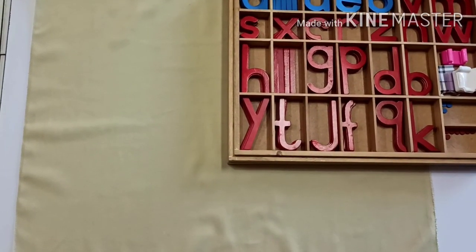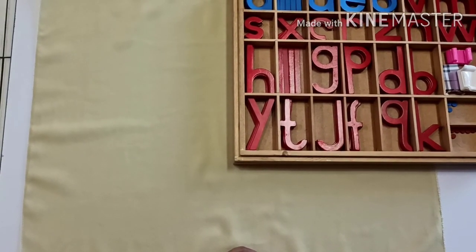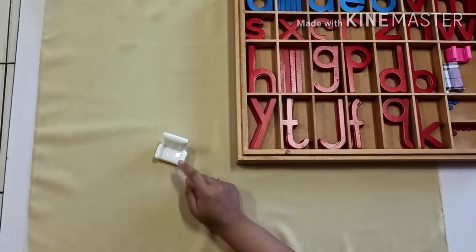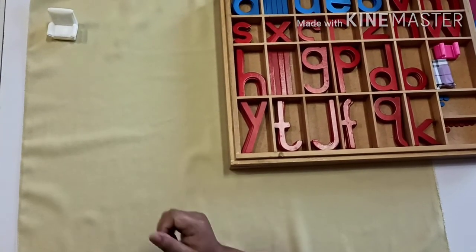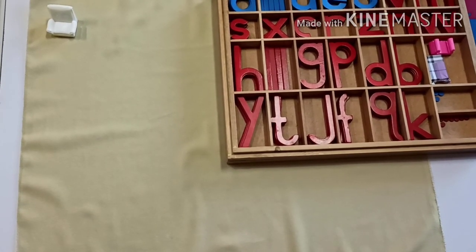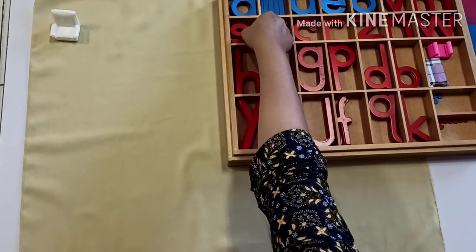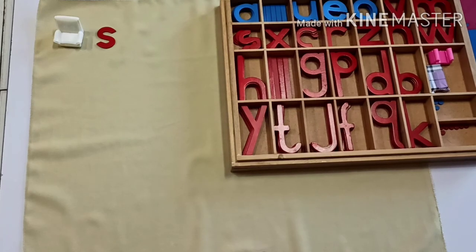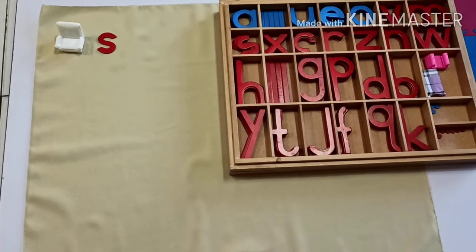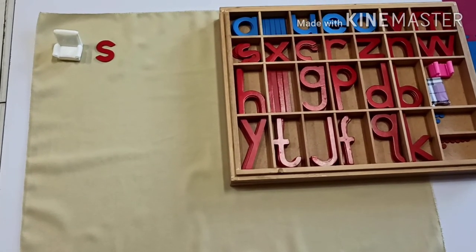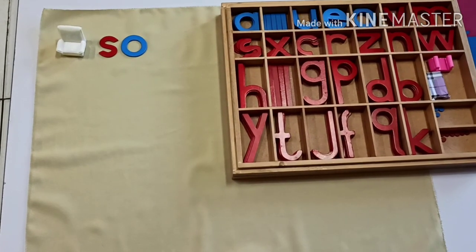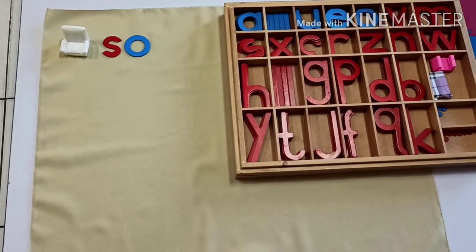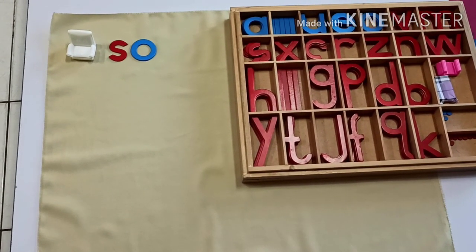Now let's go to the next one — Montessori Bahasa Indonesia for the Pink Box. Ada yang tahu ini apa? Sofa. Sekarang kita akan membangun kata sofa. Dengarkan bunyi huruf pertama: S-O-F-A. Apa bunyi huruf pertama? Dengarkan bunyi huruf kedua. Apa bunyi huruf kedua? Bunyi huruf ketiga.